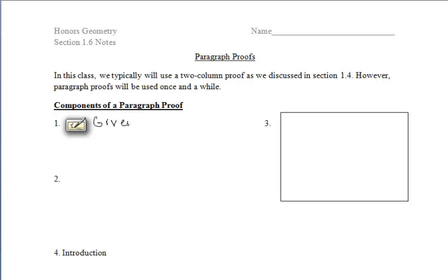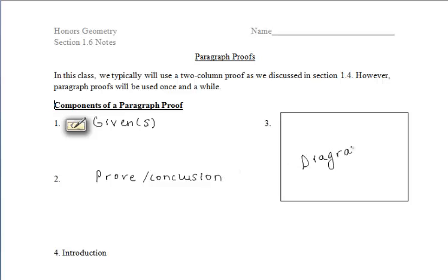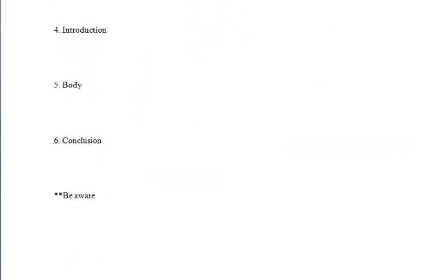In section 1.6 we'll be talking about paragraph proofs. Similarly to our two-column proofs, we have components that we have to include in our paragraph proof. We still want to write down our givens, our proven conclusion statement, and draw the original diagram so that we can add tick marks along the way.